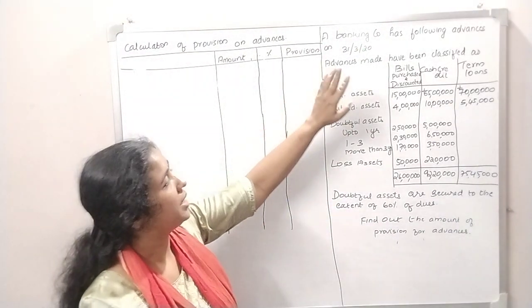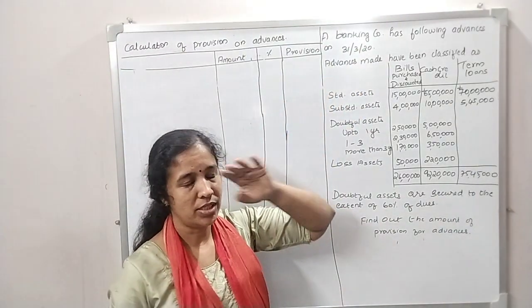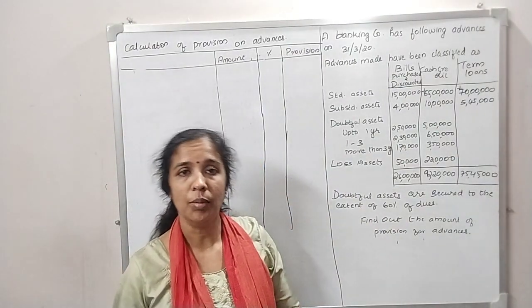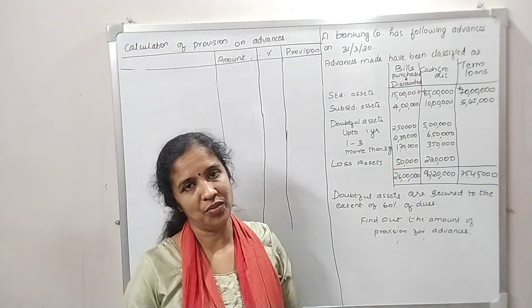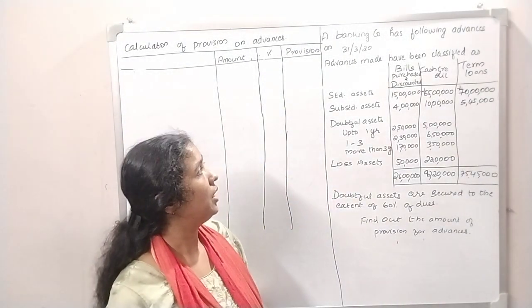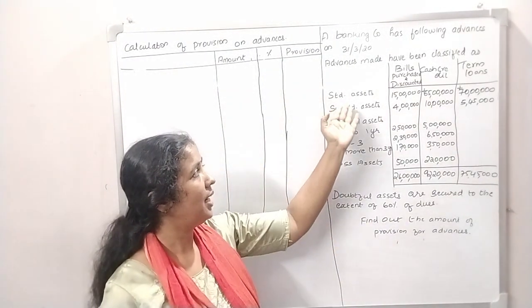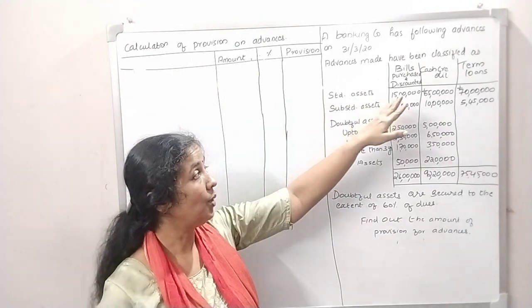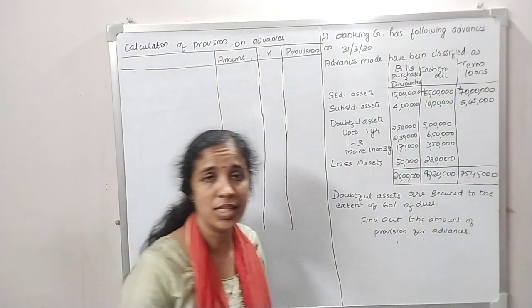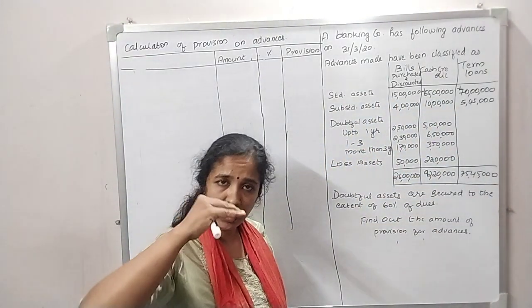What are the advances as of the 31st of 2020? These are the advances. What are the options? It is the standard assets. There are three types of advances: Loans and Advances.